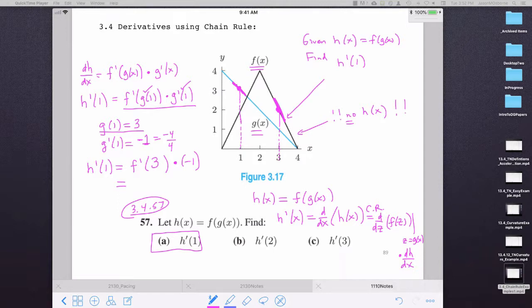And let's see, we're doing a rise of negative four. We're dropping four in a run of two. So a rise of negative four over a run of two. So f prime of three is a rise of negative four over a run of two. So it drops four units in a row as it moves to the right two. So f prime of three is negative two. So h prime of one is negative two times negative one, which is two. And that is your answer to 57 part a.